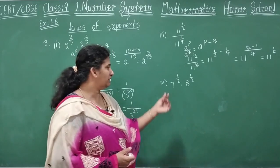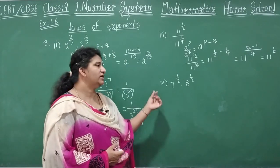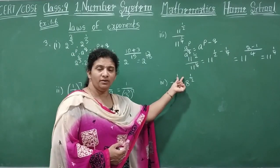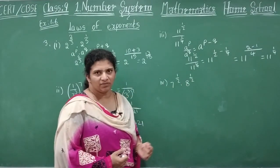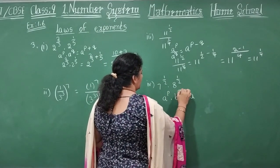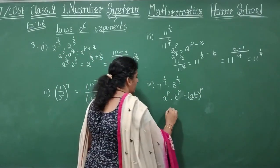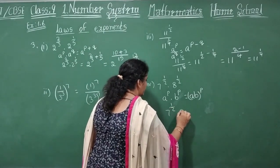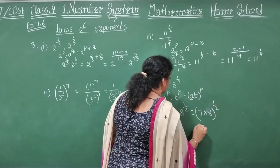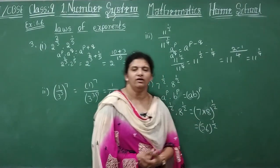Last and final problem: 7 power 1 by 2 into 8 power 1 by 2. By Law 4 — A power P into B power P equals A B whole power P — same power, so multiply the bases: 7 into 8 whole power 1 by 2. That is 56 whole power 1 by 2.